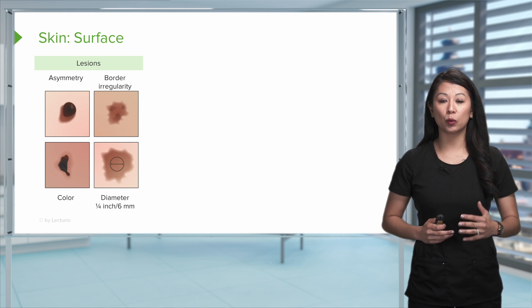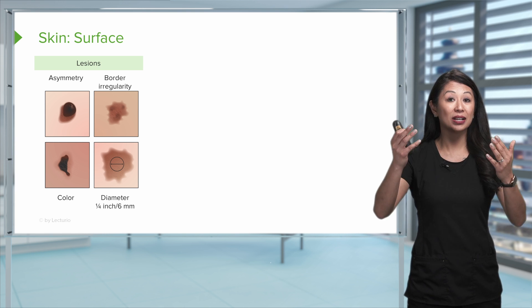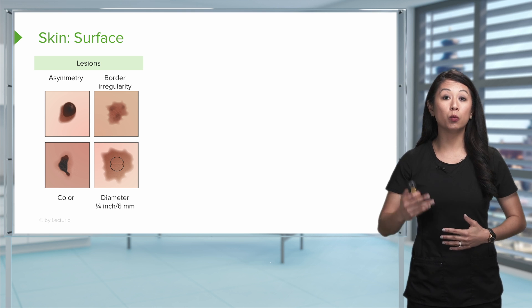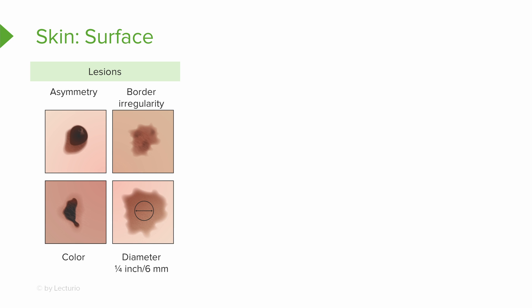Another thing to keep in mind when we're talking about the skin and we're assessing this is especially looking at the surface. Are there any wounds? Are there any lesions? If you take a look at this image, if you see any sort of asymmetry to the lesion, if it's an abnormal color, if the diameter has changed,